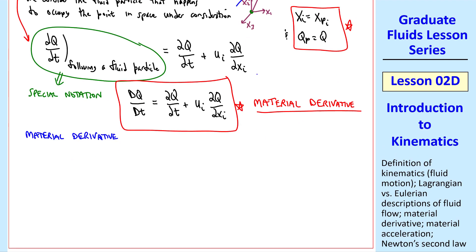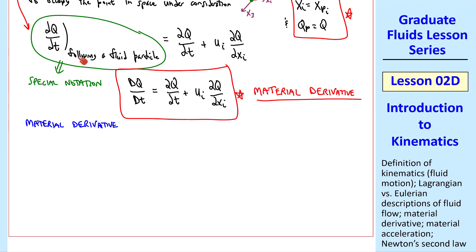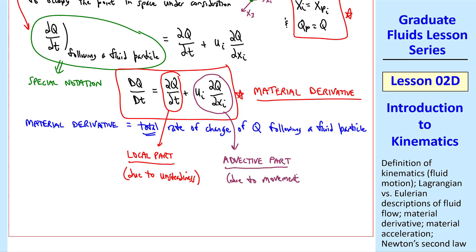The material derivative is thus the derivative of q with respect to time following a fluid particle. And it's the total rate of change of q following a fluid particle. We see that it has two parts, what we call the local part due to unsteadiness in the flow. This part would be zero for a steady flow field. This part is called the advective part. Advective is just another name for movement. So this is due to movement of the fluid particle to a different location in the flow. I should mention that some people call this the convective part, but I prefer advective since convective, to me, represents heat transfer.